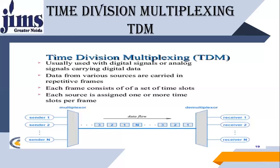There are different types of multiplexing, and we focus on Time Division Multiplexing. TDM is usually used with digital signals or analog signals. Data from various sources are carried in respective frames. Each frame consists of a set of time slots, and each source is assigned one or more time slots per frame. In TDM, all sources share the same bandwidth, but time slots are given to different sources.